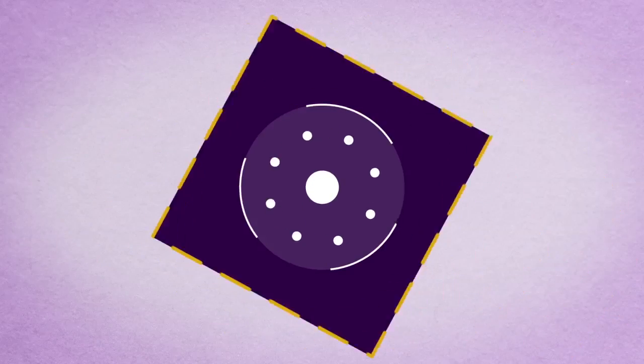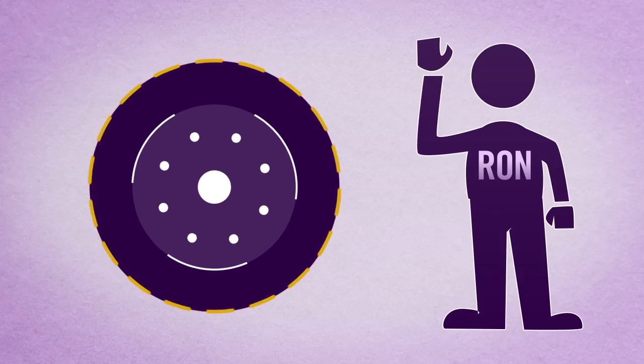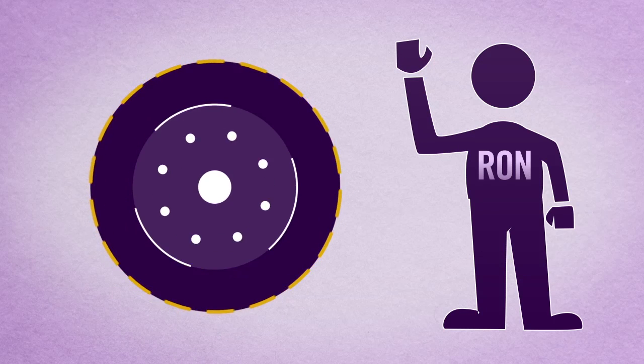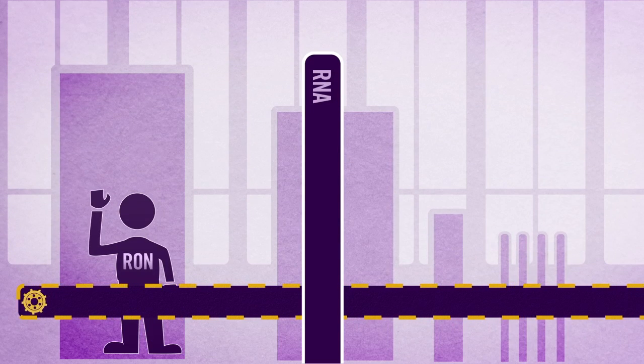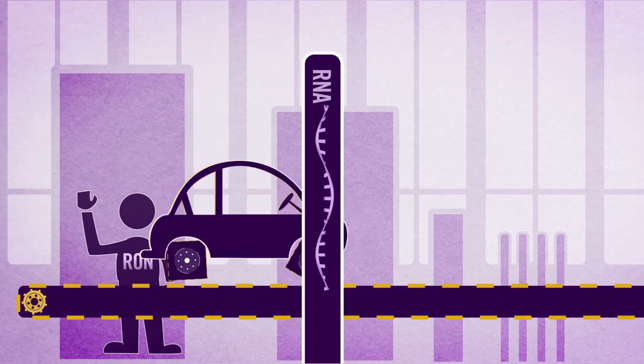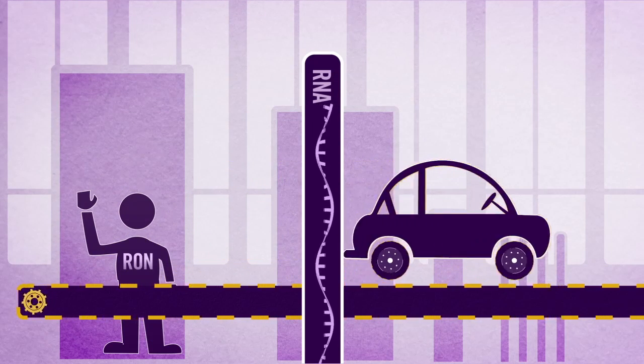On the other hand, if you could use Ron, or RNA, to correct the source of the problem, then you could stop those defective cars from even being produced. Since Ron is in charge of the assembly line, he can target the specific part that's causing the defect. It's a much more efficient solution.